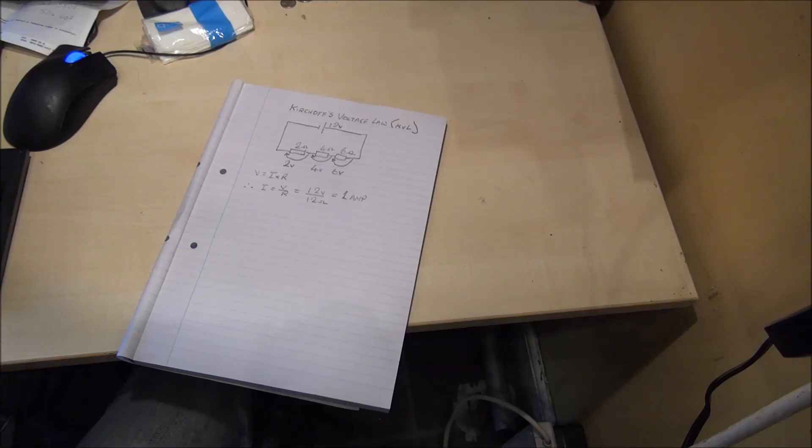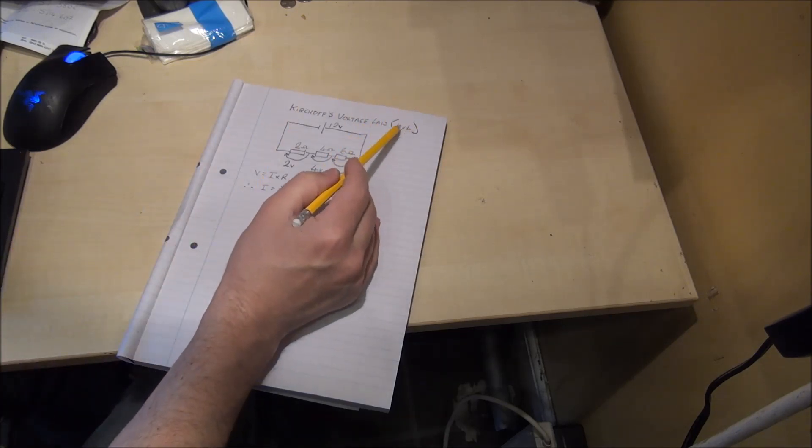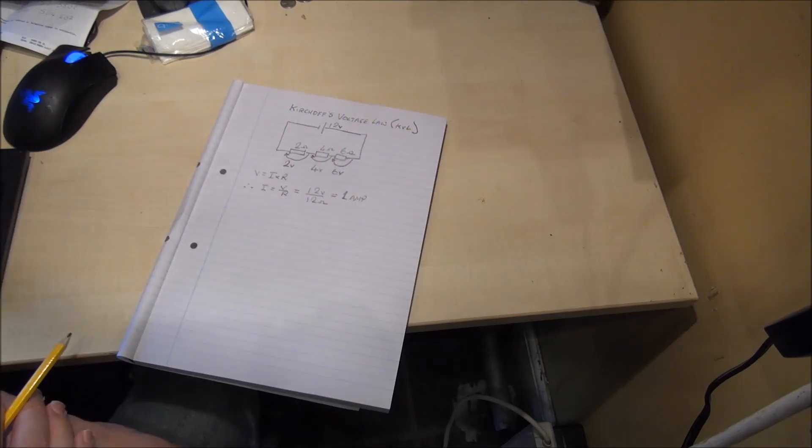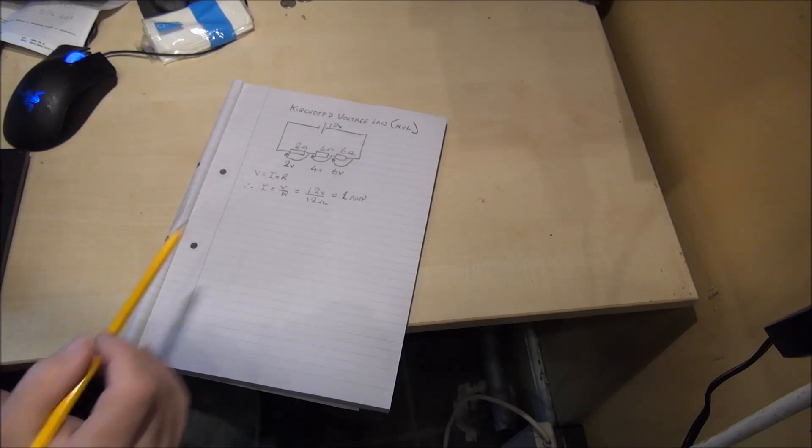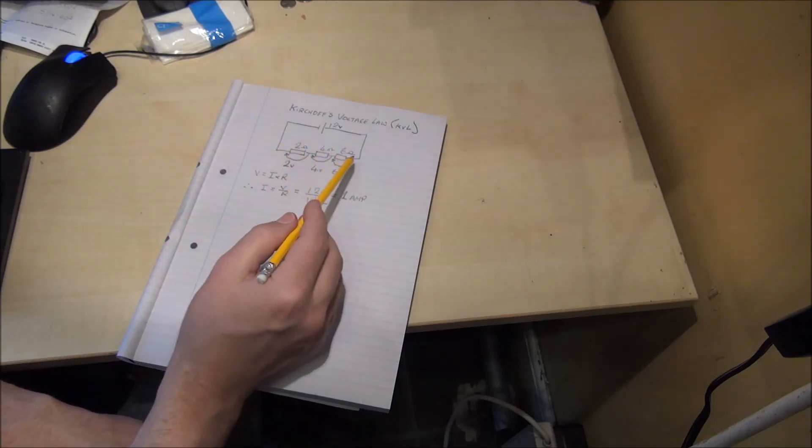the current flowing and the power dissipated in a circuit that contains two voltage sources and three resistors. To start with we will look at Kirchhoff's voltage law which is often abbreviated to KVL and Kirchhoff's law states that the sum of voltage drops in the external circuit